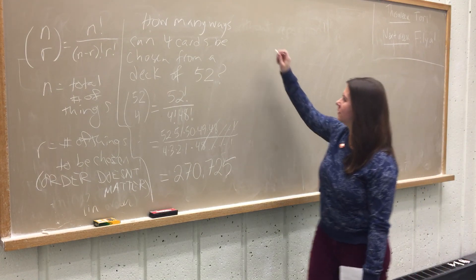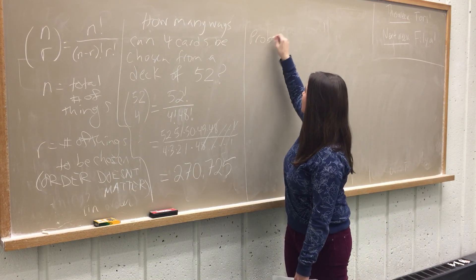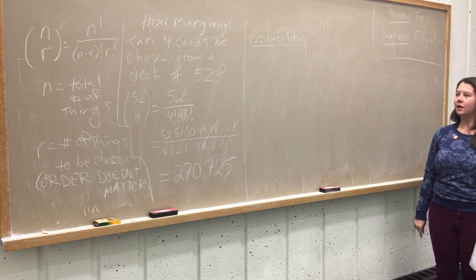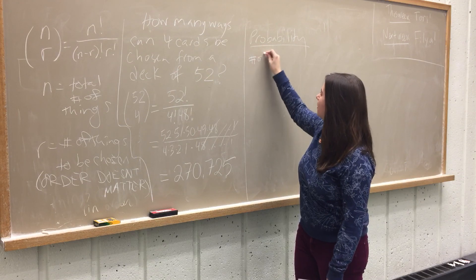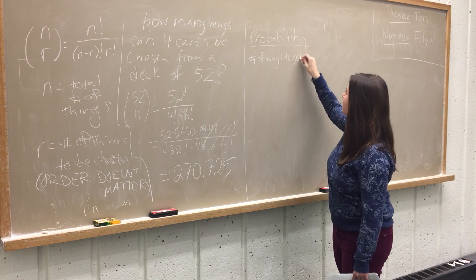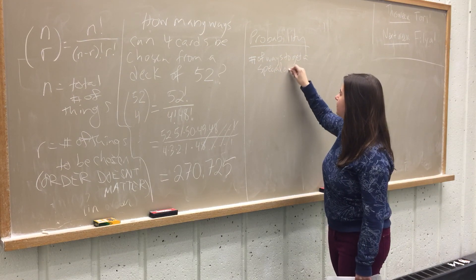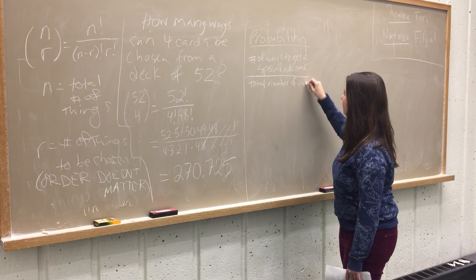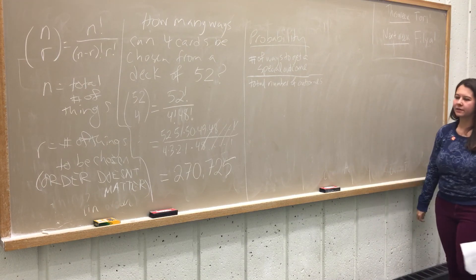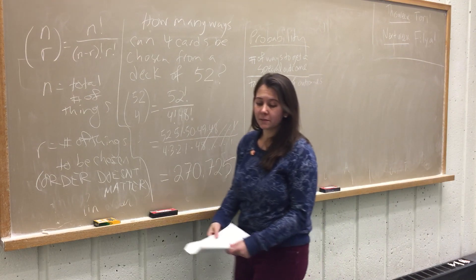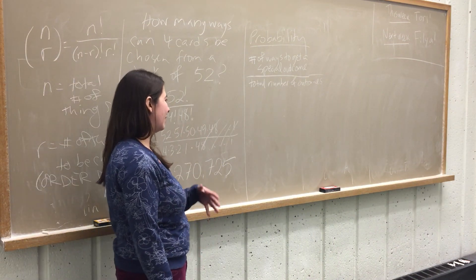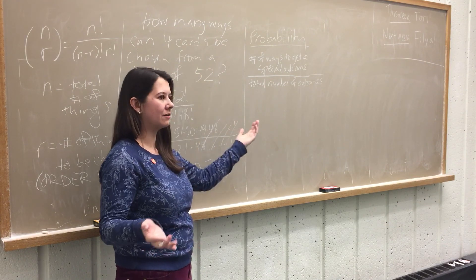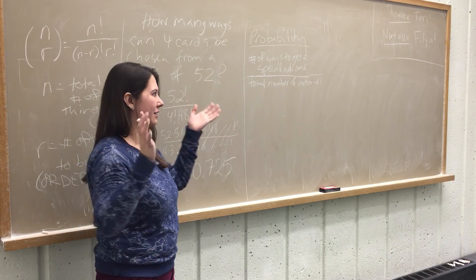Let's start talking about probability — and this is just going to be an incredibly naive approach. When we calculate a probability, we're asking: what is the number of ways to get a special outcome over the total number of outcomes? The smallest example would be flipping a coin — if your special outcome is heads, there's one way to get it and two possible outcomes, so the probability is one over two.